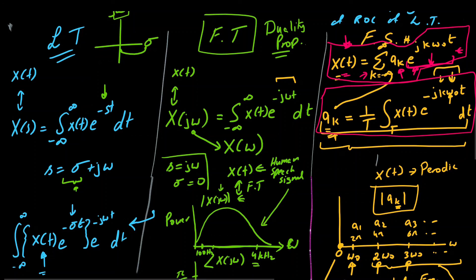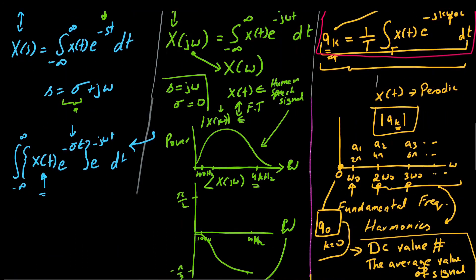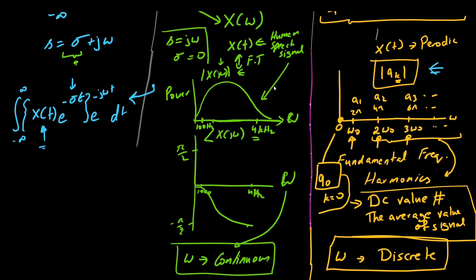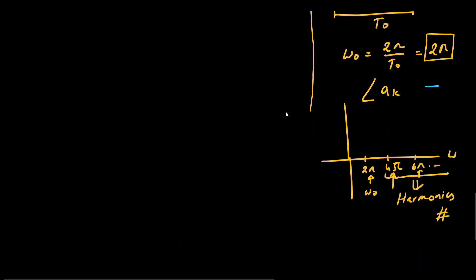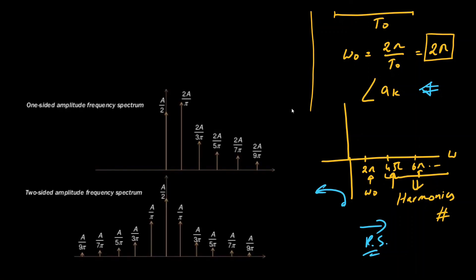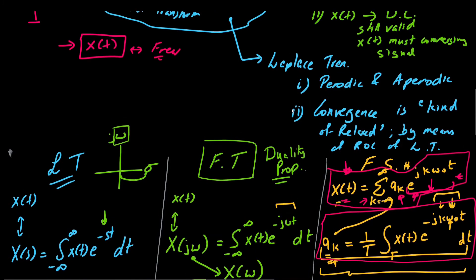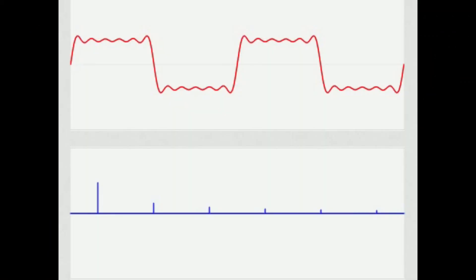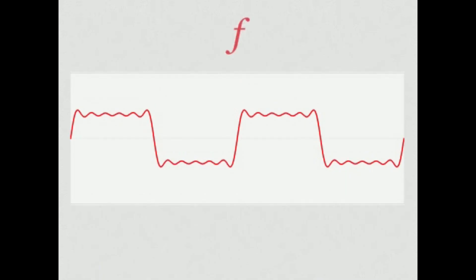So there you have it — the interplay between the Fourier series, the Fourier transform, and the Laplace transform, where we discussed the magnitude spectra and phase spectra. Note that the magnitude spectra and phase spectra combined are simply called the spectra, and this was the right-sided spectra — there is a continuation on the left side as well. In the next video we will look into the synthesis and analysis expressions of the Fourier series and how we can decompose a periodic signal by means of simple sinusoids.